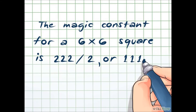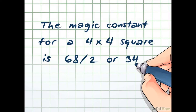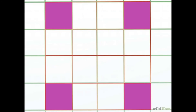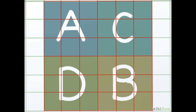Persegi ajaib sudah dikenal oleh matematikawan Cina sejak tahun 650 sebelum masehi. Ada kemungkinan sudah dikenal oleh matematikawan Arab sejak abad ke-7, seperti Al-Buni dalam kitabnya Samsyul Ma'arif dan Manbau Usul Hikmah. Di abad ke-10, seorang ahli matematika asal Persia, Budjani, meninggalkan sebuah manuskrip yang pada halaman 33 berisi beberapa pola wifik atau magic square.